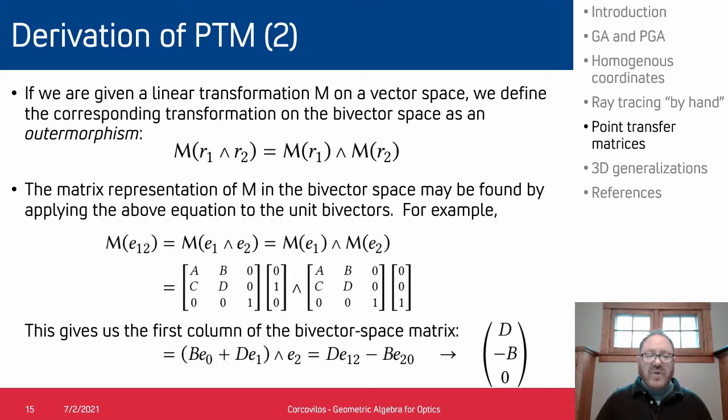Now that we know how our rays transform in homogeneous coordinates, we can construct the point transfer matrices and we do this through the outermorphism property. What this means is that if we want to find the linear operator that acts on a point, we can treat that point as the intersection of two lines, transform each of those lines individually and find where the new lines intersect. And if we do that we can do that most simply by looking at each of the unit vectors for the bivector representation and breaking that down into its component vector products and running those through the matrix. And that'll give us a new column in the bivector representation.